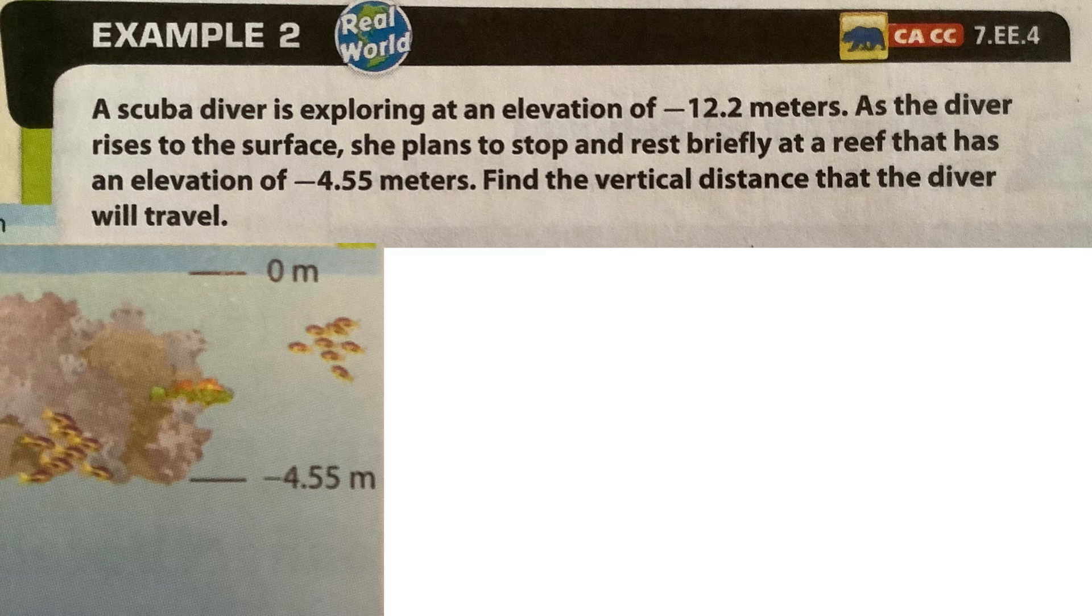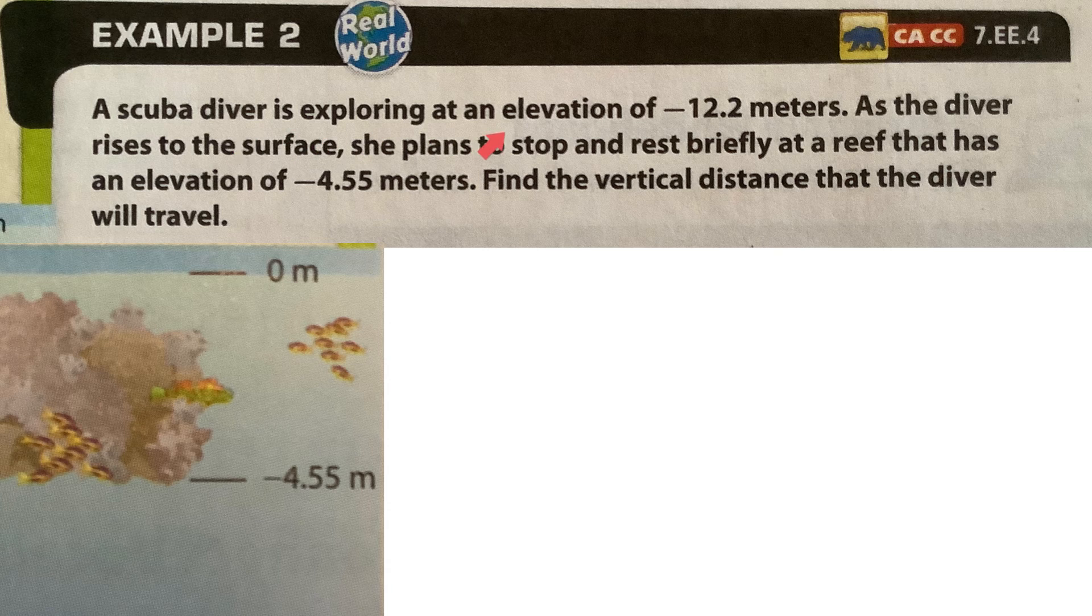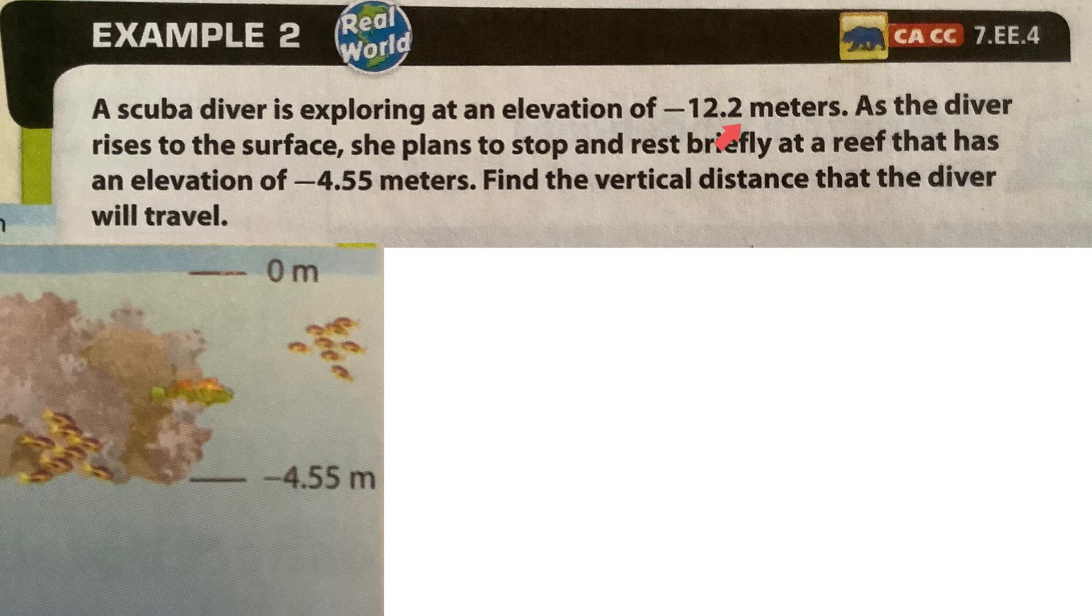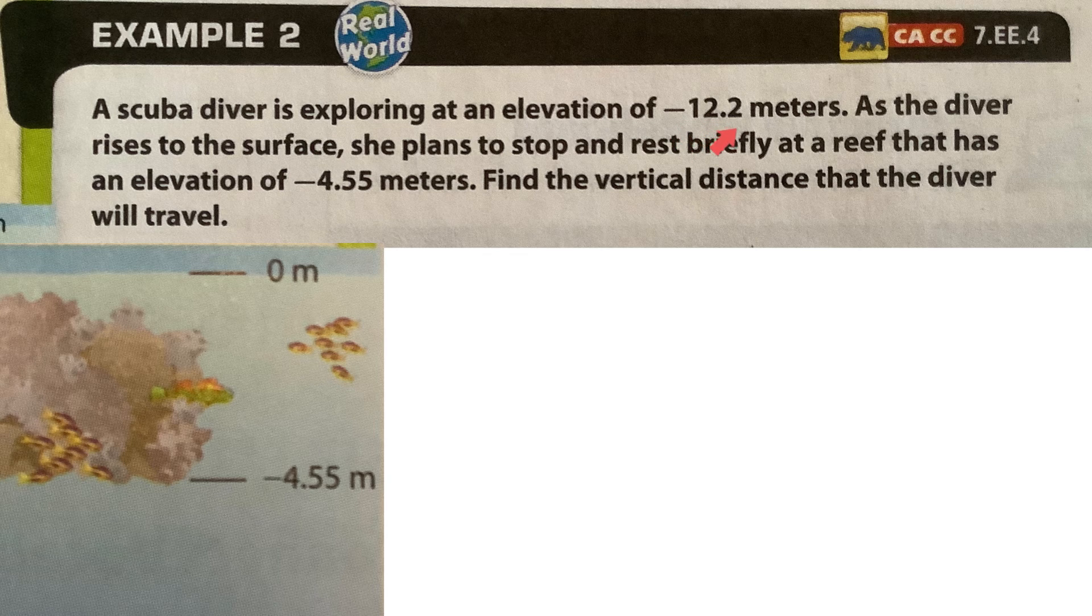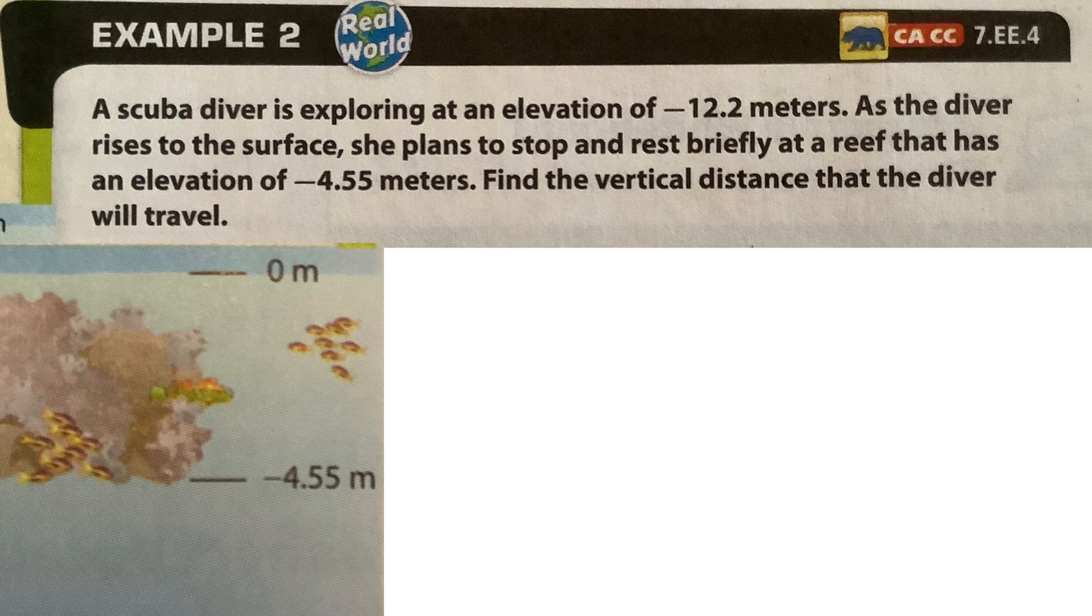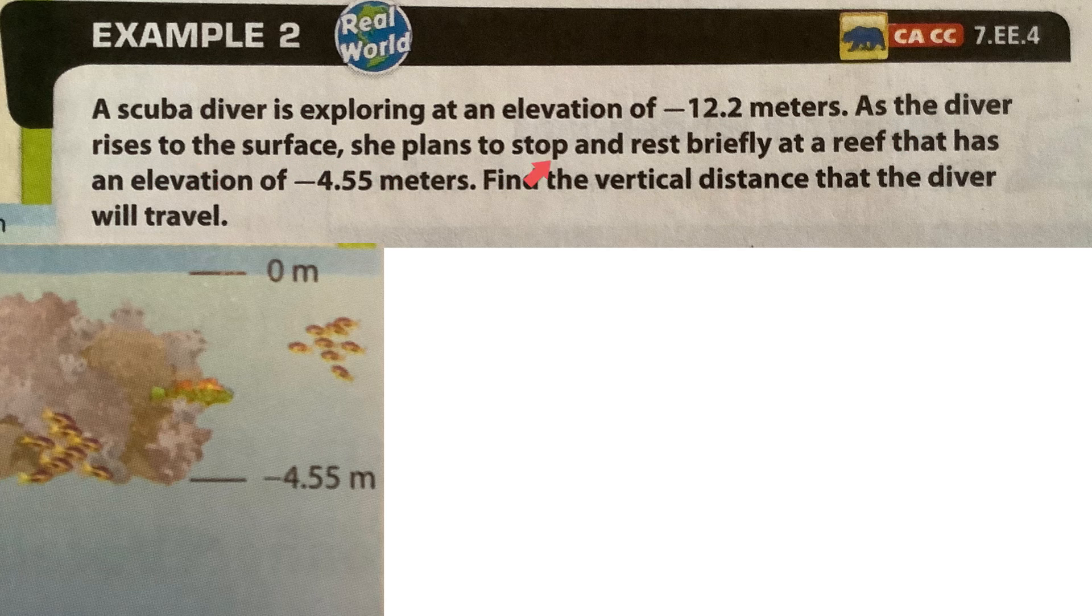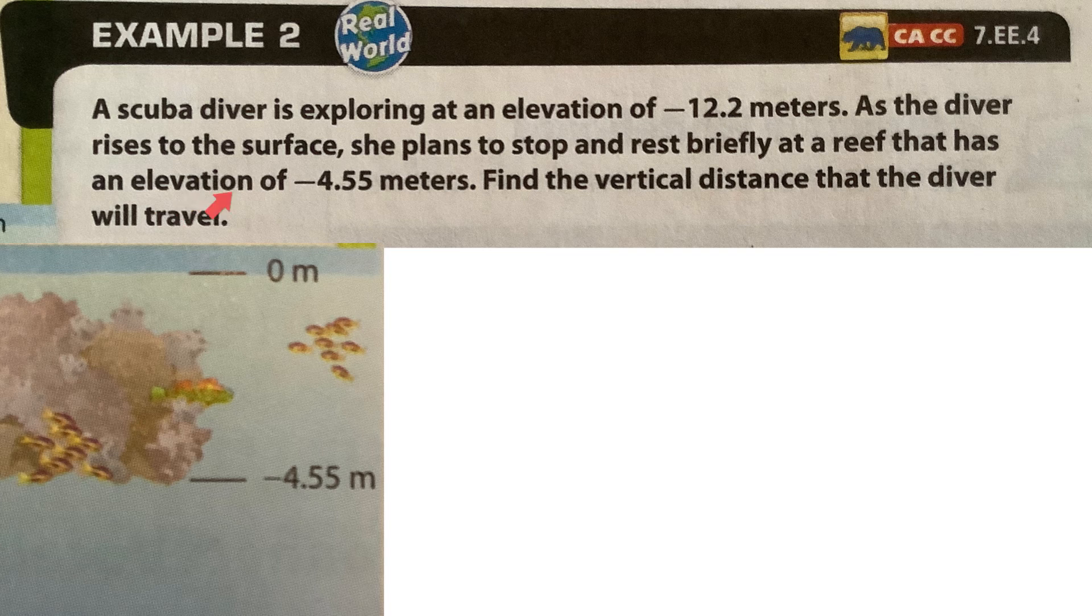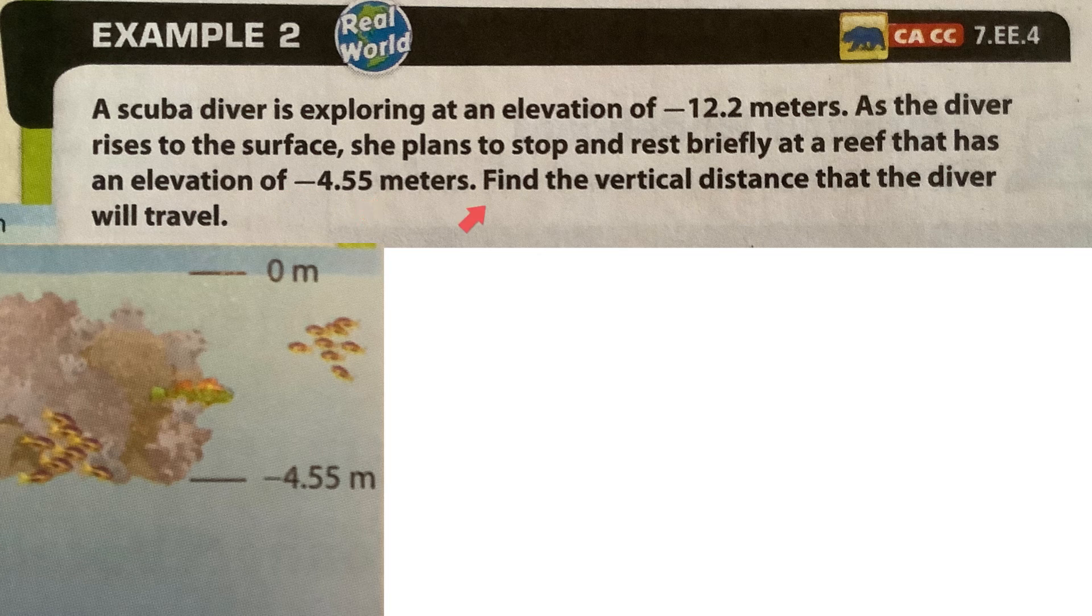All right, so we're at this example two. And it says, a scuba diver is exploring at an elevation of negative 12.2 meters. That means she's 12.2 meters under sea level. And as the diver rises to the surface, she plans to stop briefly at a reef that has an elevation of negative 4.5 meters. Find the vertical distance the diver will travel.